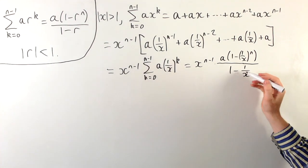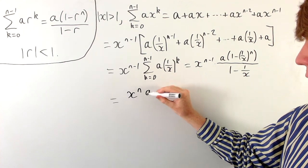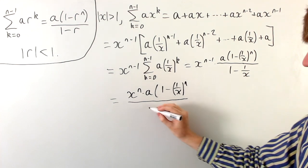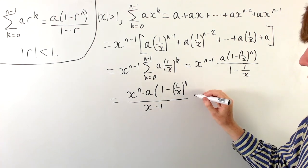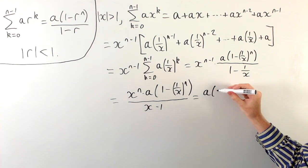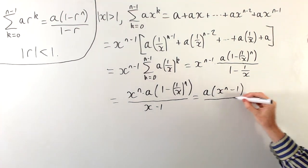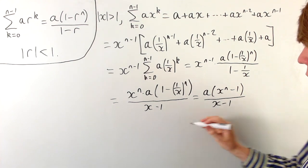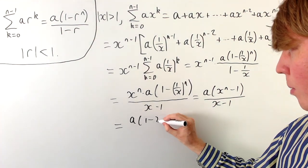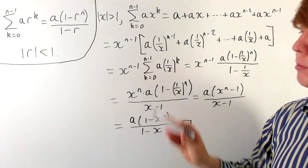Multiplying the numerator and denominator by x to simplify: we get x to the n times a times (1 minus (1/x) to the n) all over (x minus 1). Expanding the bracket and bringing x to the n inside gives a times (x to the n minus 1), since x to the n times (1/x) to the n equals 1. So we have a times (x to the n minus 1) over (x minus 1). Multiplying top and bottom by negative 1 gives the familiar form: a times (1 minus x to the n) all over (1 minus x). This confirms the formula works even when the modulus of x is greater than 1.